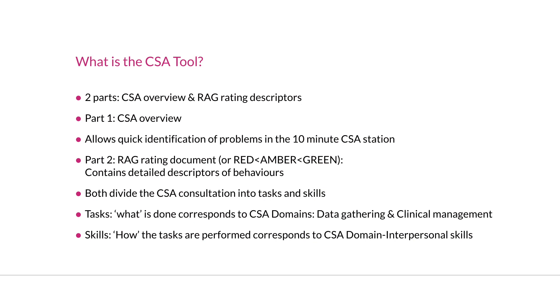The tool consists of two parts: the CSA overview and the RAG rating descriptors — RAG being short for red, amber, and green. Part one, the CSA overview, allows quick identification of problems within the 10-minute role play. Part two, the RAG rating, enables more detailed word descriptors of the behaviours. Together they divide the CSA consultation into tasks and skills. Tasks — what is done — correspond to the CSA domains of data gathering and clinical management, which together are responsible for two thirds of the marks.